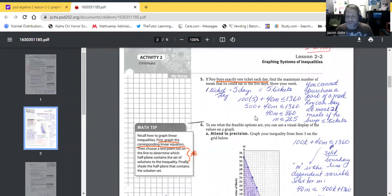All right guys, so now we're going to do the reverse. If Roy buys exactly one ticket each day, find the maximum number of meals that he could eat in five days. Show your work. So now we're concentrating on the five tickets, but we actually want to know about the meals. Like as of above, it was the opposite. So one ticket times five days equals five tickets.